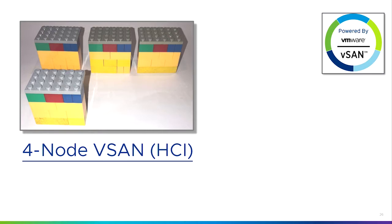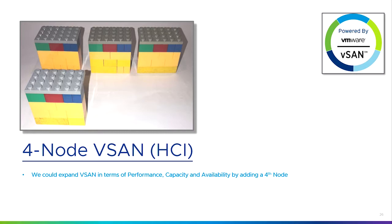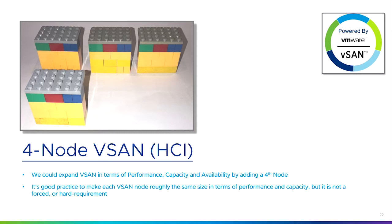If I want to expand that three-node or three-server solution to a four-node solution, I can just add another node or server. Now I've got a four-node vSAN or four-node hyperconverged infrastructure. By adding another node, we expand vSAN in terms of performance, capacity, and availability. It's good practice to make the nodes roughly the same size, but it's not a forced or hard requirement.